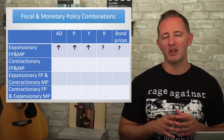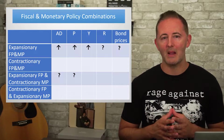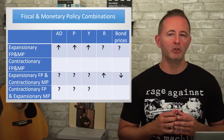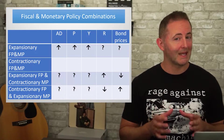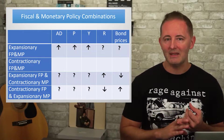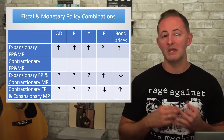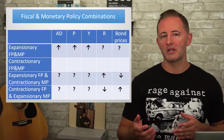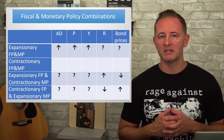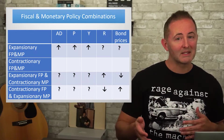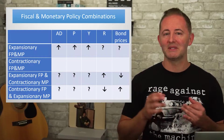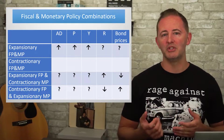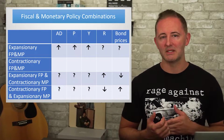Here's a table with the various combinations of policies and how they affect our main variables. When it's the same type of policy, the impact on AD, Y, and P is clear, but what's unclear is what happens to interest rates and bond prices. When the two policies are mixed, it's unclear what happens to AD, Y, and P, but clear what happens to interest rates and bond prices.